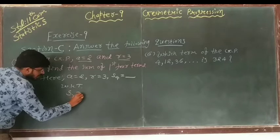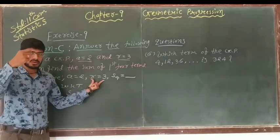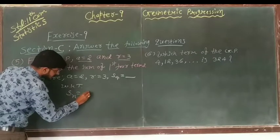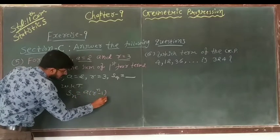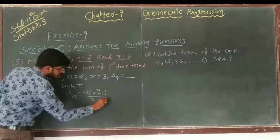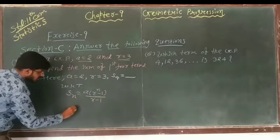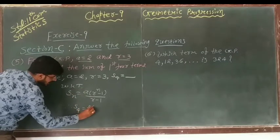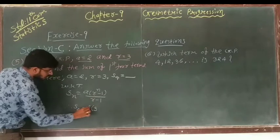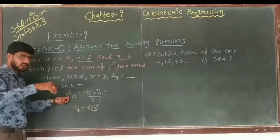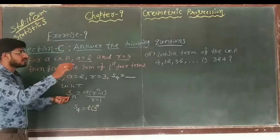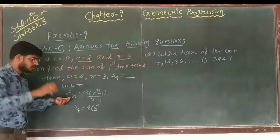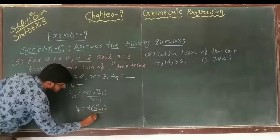Since R equals 3, which is not equal to 1, we use the formula: Sn equals A multiplied by (R raised to N minus 1) upon (R minus 1). Therefore S4 equals 2 multiplied by (3 raised to 4 minus 1) upon (R minus 1), because we need the sum of the first 4 terms so N equals 4.